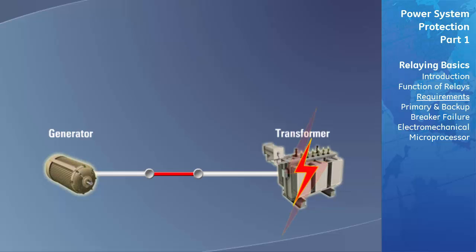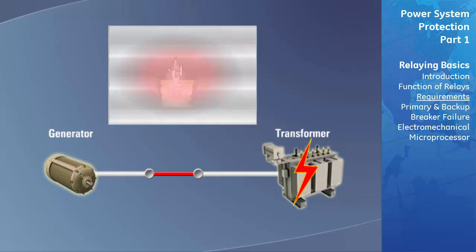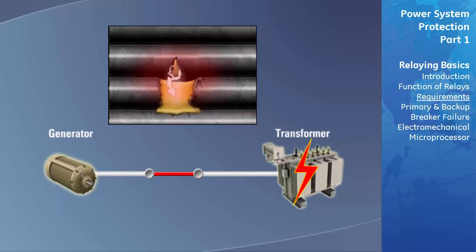The speed at which a damaged power system component is isolated from the rest of the system has a direct bearing on the damage done by a short circuit and, consequently, the cost and the delay in making repairs. Therefore, speed is essential for most relaying applications.